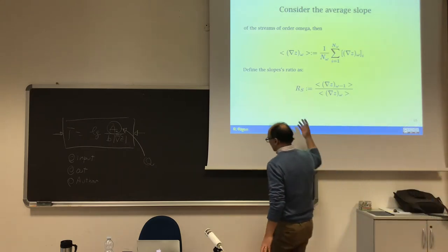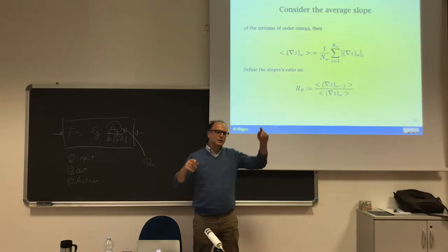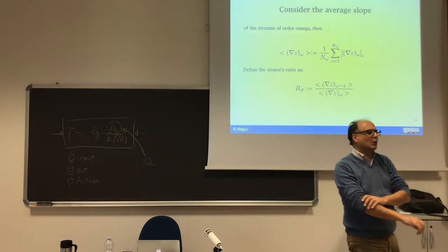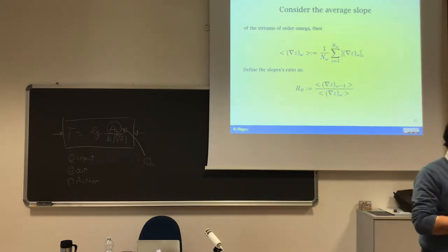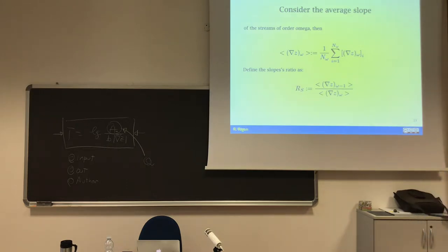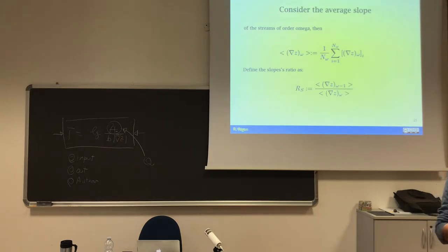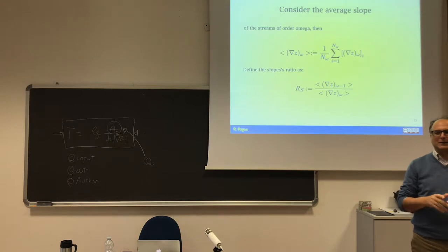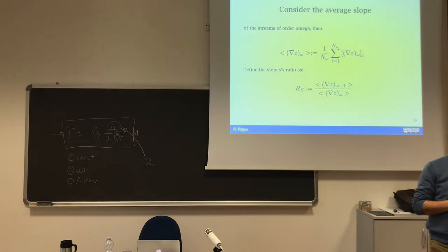We can also look at slope, though estimating it is a little more involved. One challenge for you: now that you have the Strahler ordering of the river, you count the length of each stream of a certain order, compile the statistics, and calculate the Horton-Strahler laws.